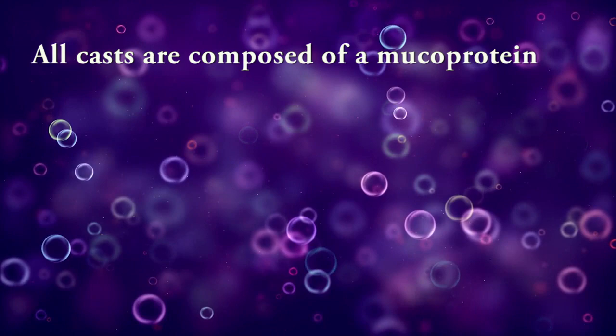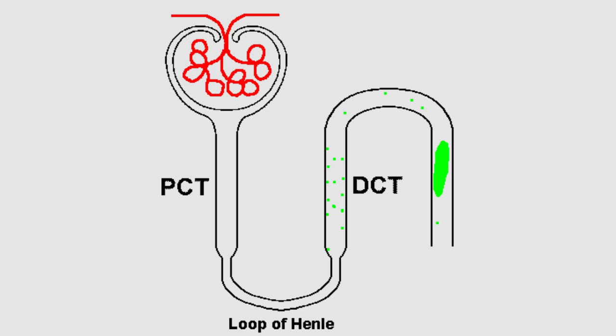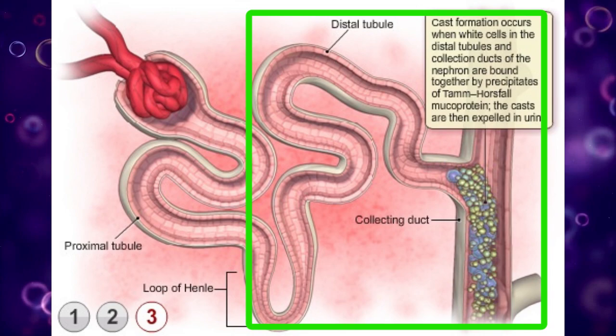All casts are composed of a mucoprotein known as Tamm-Horsfall protein, which is secreted by the distal loop of Henle. Therefore, urinary casts are formed only in the distal convoluted tubule or the collecting duct.